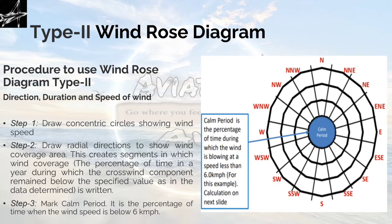Moving forward to a more elaborative type 2 wind rose diagram. In this we have direction, duration and speed of wind also. Step 1: draw concentric circles showing wind speed. We have drawn concentric circles and they are now showing wind speed. In the previous part, they were showing wind duration.